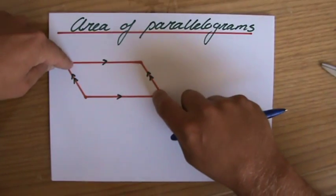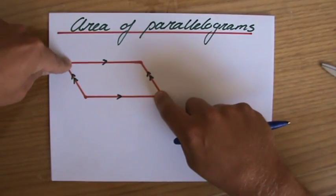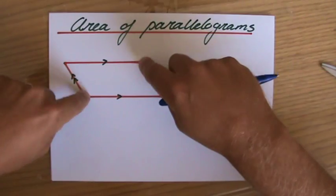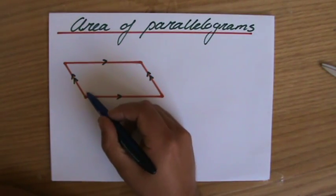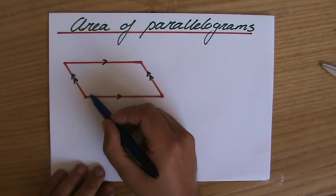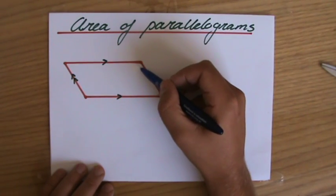And those opposite angles are also equal. So if this angle, for instance, is obtuse, let's say 120 degrees, that makes that angle 120 degrees.